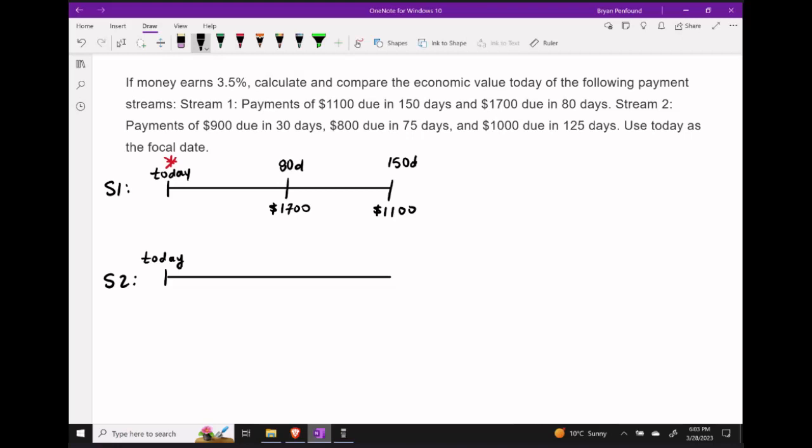For payment stream number two, we have our first payment of $900 in 30 days. Our second payment is $800 in 75 days. And our final payment is $1,000 at the 125 day mark.